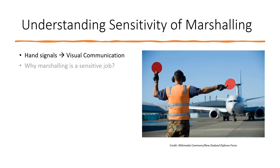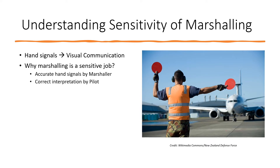The job of the marshaller is very sensitive because he has complete control of guiding the aircraft on the ramp without having any means to talk to the pilot through some headgear like the air traffic controller does. A marshaller relies on his hand signals to communicate to the pilot how to maneuver the aircraft. This inability to establish audible communication makes it extremely important that marshallers' hand signals are accurate and pilots' interpretation of those hand signals is correct.